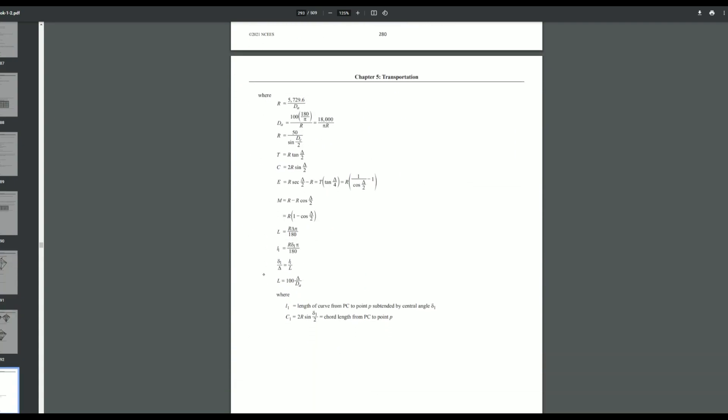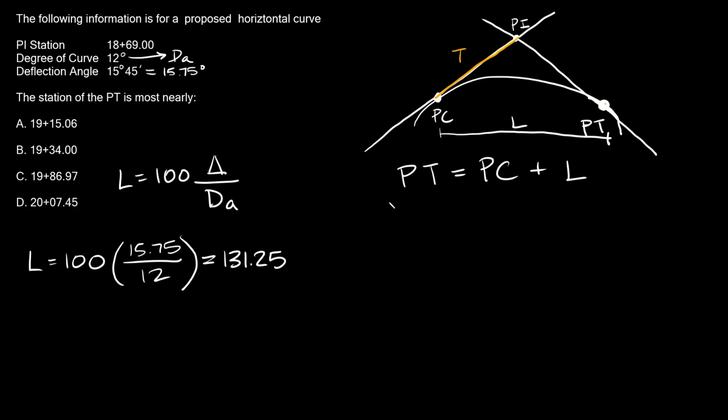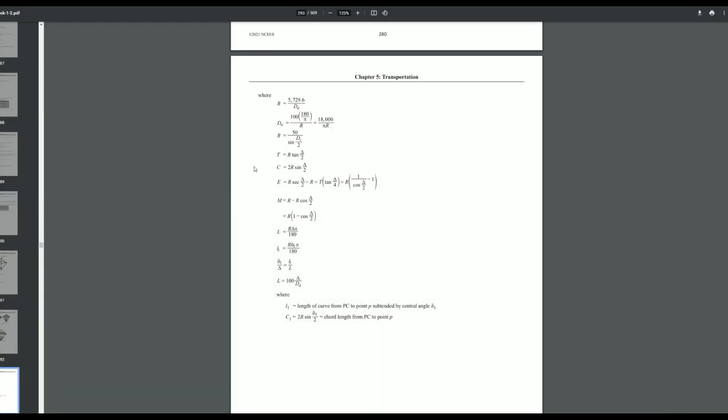So how can we solve for the tangent? Let's go to our formulas. The tangent is equal to r tan delta over 2. We don't know r, which is the radius, so let's go back to our handbook and figure out how to solve for the radius.